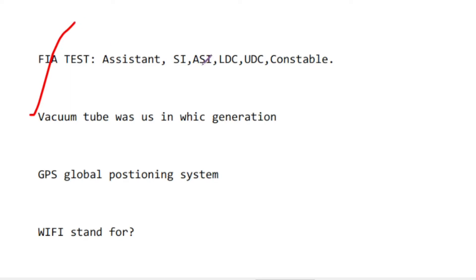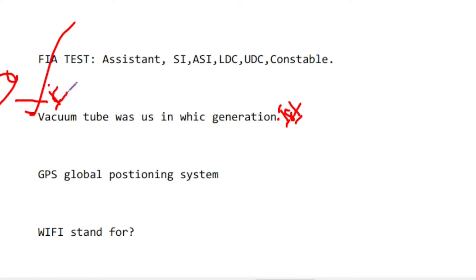This is a very good question we have solved before in almost every FIA test. The first generation of computers was vacuum tube based, the second generation was transistor-based, the third generation was IC (Integrated Circuit), and the fourth generation is very large scale integrated and finally ultra large scale integrated.